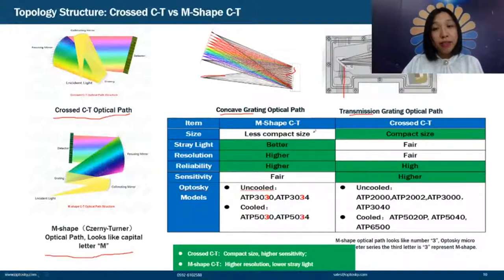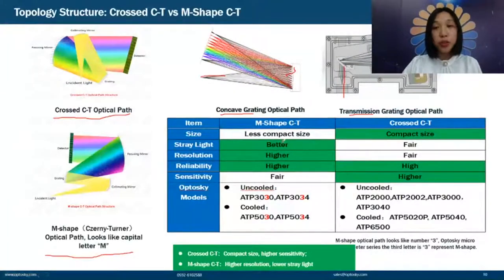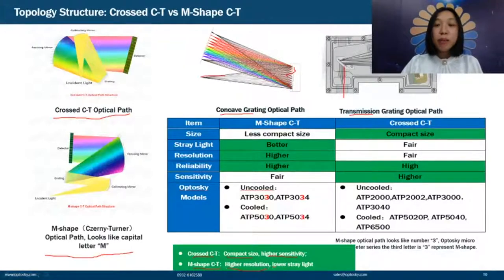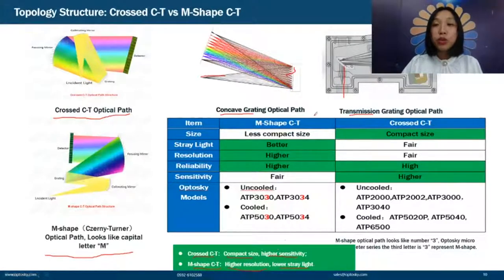Comparing M-shaped CT and cross-shaped CT — both have their advantages and disadvantages. Cross-CT has a more compact size and better sensitivity. M-shaped CT has higher resolution but lower stray light. For high-end Raman spectrometers, M-shaped CT is commonly used.